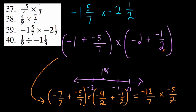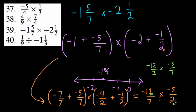Now we have negative 12 over 7 times negative 5 over 2. There's an opportunity to cancel because 2 is a factor of 12. We can switch the order and write negative 12 over 2 times negative 5 over 7. Negative 12 divided by 2 is negative 6, so this becomes negative 6 over 1 times negative 5 over 7. Negative 6 times negative 5 is positive 30, over 7, and that's our answer.